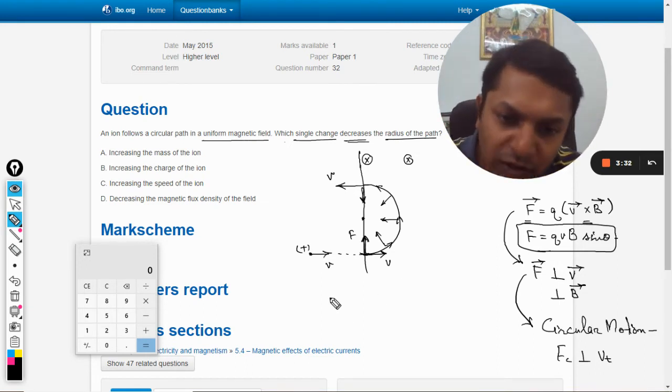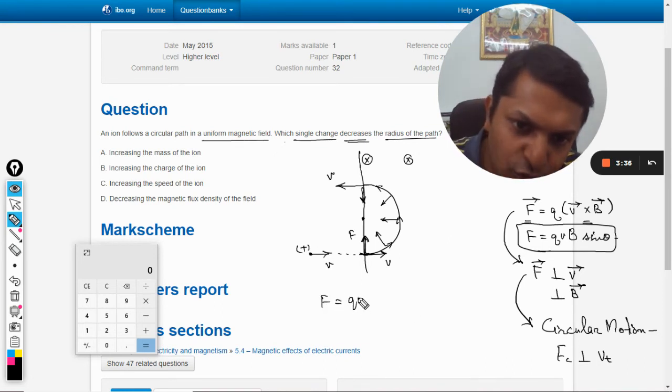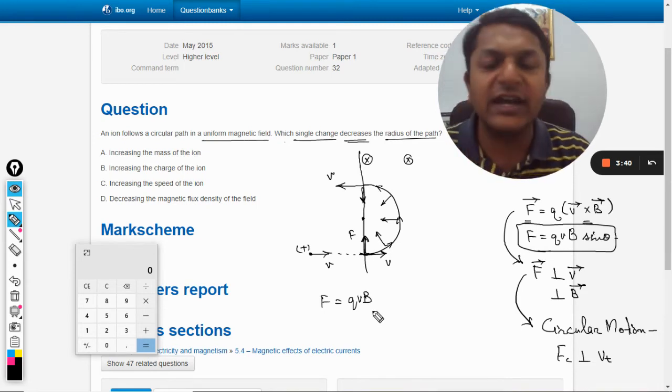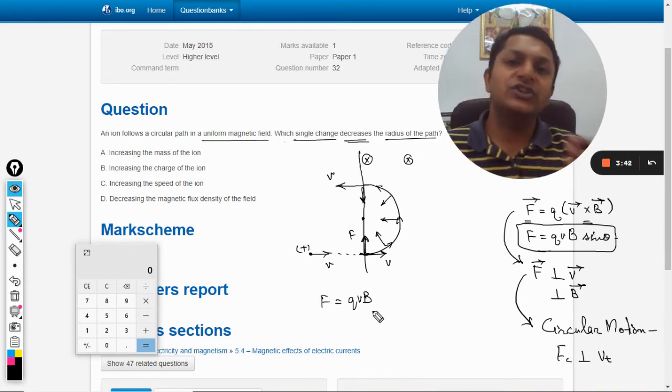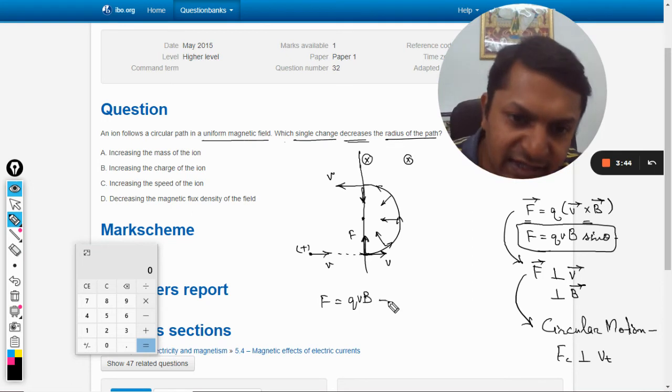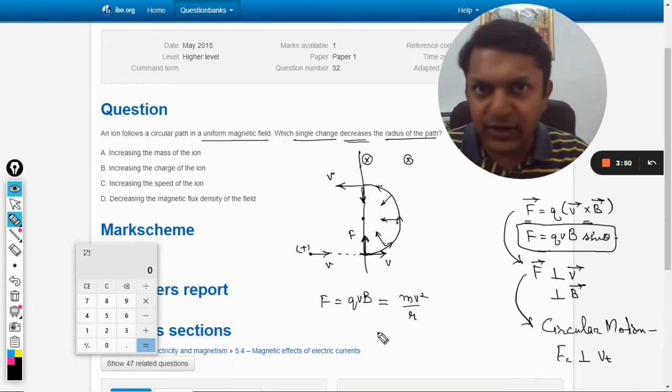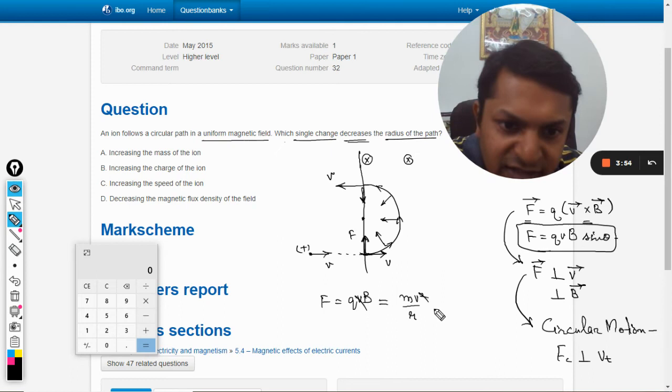To find the radius of this circle, the force is qvB, skipping sin theta because theta is 90 degrees. This is equated with the centripetal force which is mv squared by r. We cancel v with v and we get the radius which is mv by qB.